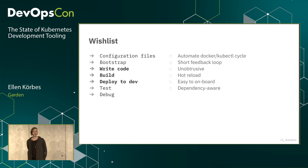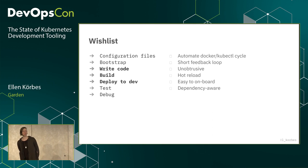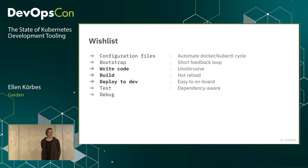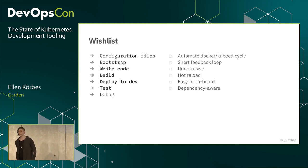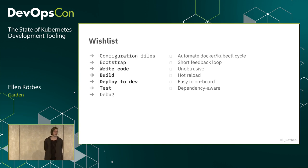I ran a poll on Twitter about how long it takes, when you change one line of code, for that change to be running in your development cluster. I got about 2,000 answers. About 40% said it took them 30 minutes or more, 40% said it took them 5 minutes or more, and the remaining said it took them like 5 seconds. I think everyone can get to 5 seconds. We don't need to be waiting 5 minutes or half an hour to see changes. When you're writing code and you have to wait half an hour, when you get back to it, you don't remember what you were doing anymore.